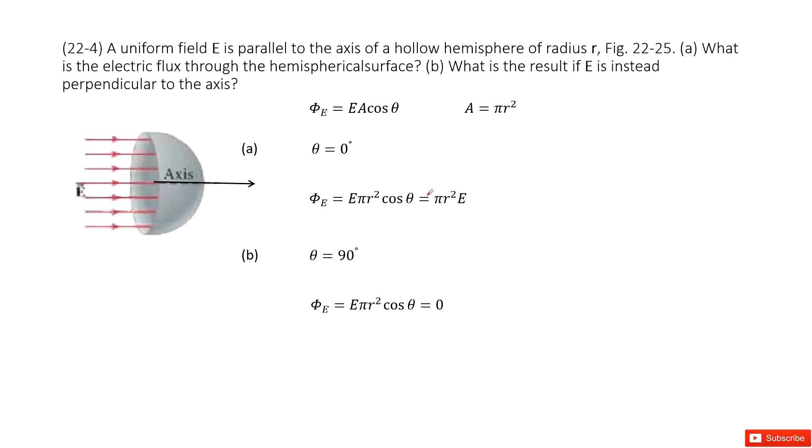We can see we have a uniform electric field parallel to the hemisphere. So this is the object. Now we need to find the electric flux through this object.